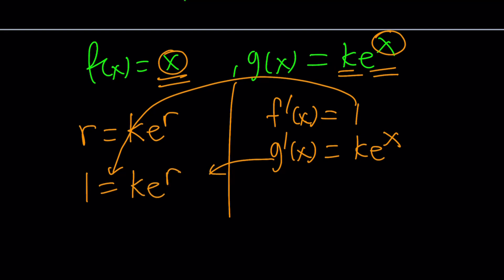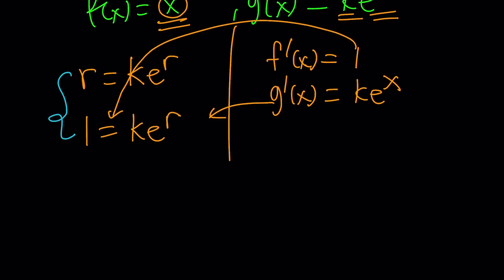Now take a look at this system. Take a good look. They're both equal to k e to the r, which means r equals 1. Great. Quick result. But we're trying to find k, not r. No worries. We can replace r with 1, and we'll get the k. Let's do it.